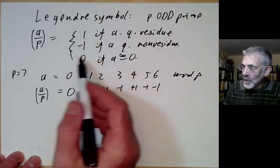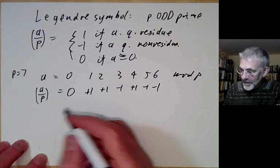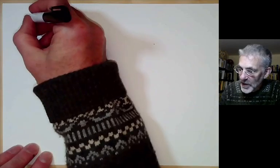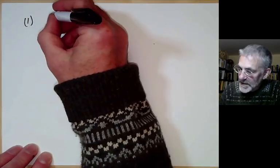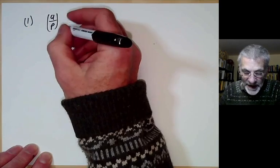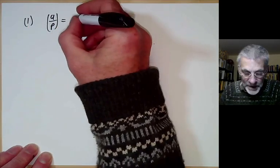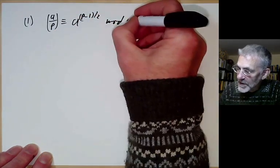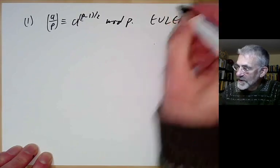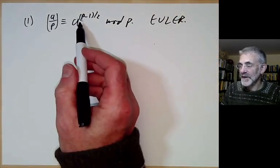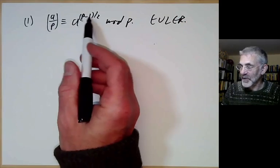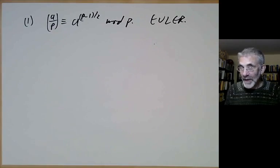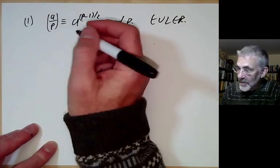Now let's explain why we adopt such a funny definition — it's very convenient because of the following properties. The first property is that the Legendre symbol (a/p) is congruent to a^((p−1)/2) modulo p. We've actually proved this before — this is just Euler's theorem, which says you can tell whether or not a is a square just by looking at whether this number is +1 or −1. We gave a proof earlier, but let's give another proof.